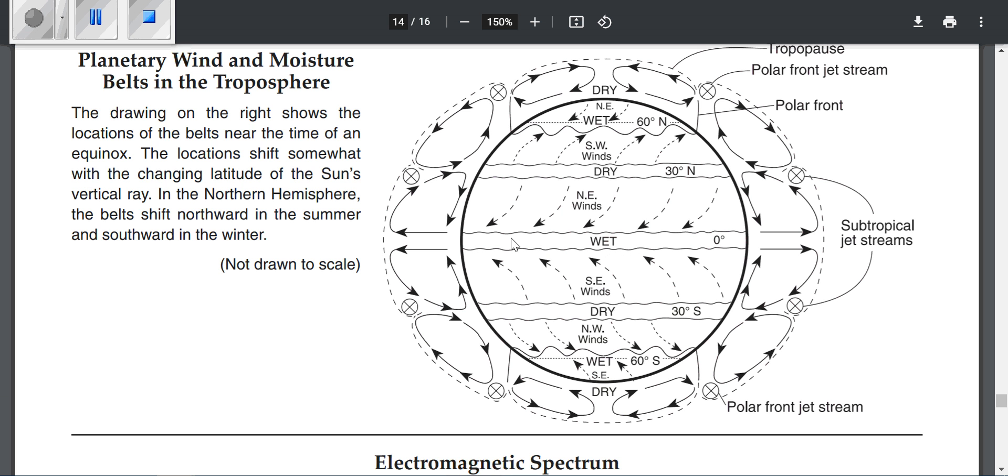This is a wet belt. The equator is very wet—this is where the rainforests are. If you look at the air from the side, it's rising because it's hot. Hot air rises, expands, cools, and forms condensation and clouds. The equator is very cloudy and rainy because it's so hot.